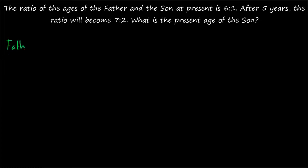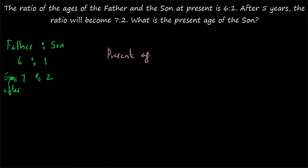Father to son's ratio is given: it is 6 is to 1 at present, and after 5 years it will become 7 is to 2. Then you have to find out the present age of the son. Here also you can apply a shortcut formula. You have to set up present age and after 5 years as your raw values — present and after 5 years.